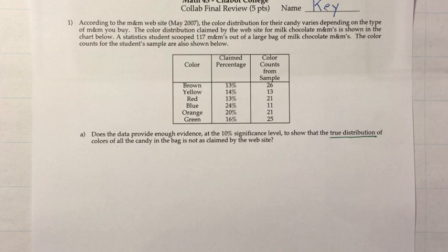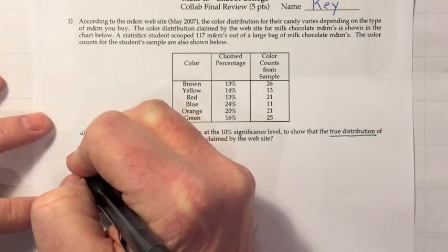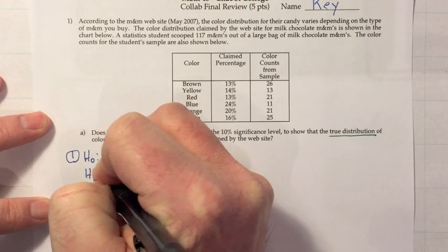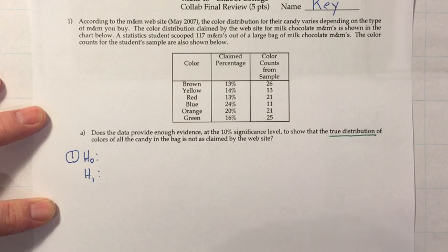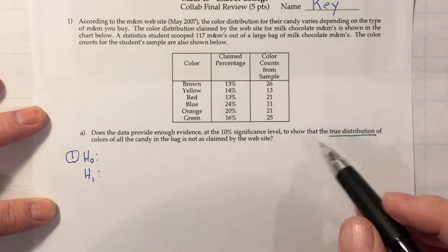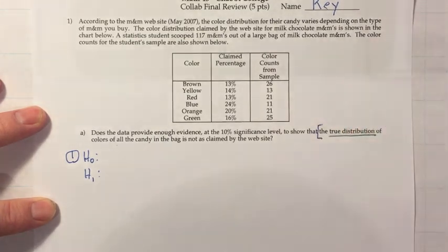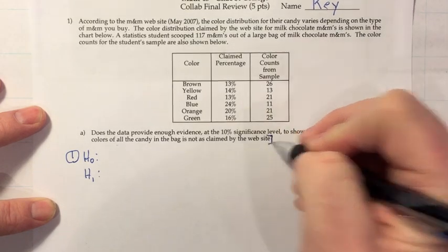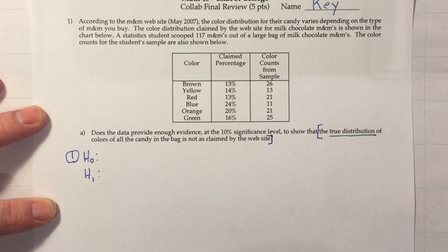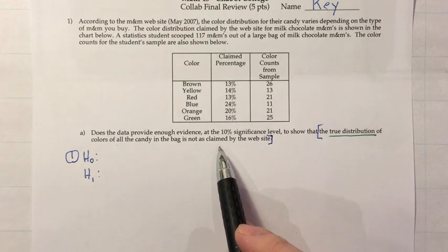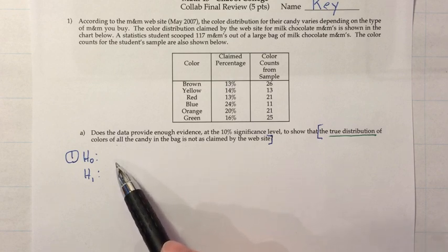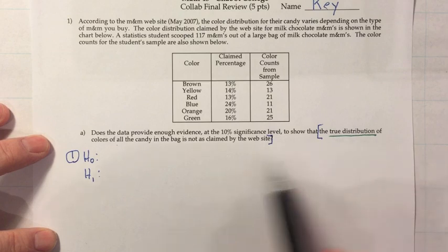We're going to do the six steps. Step one is to write down the null and alternative hypotheses — H0 and H1 — and for these they are written in words. A lot of times you'll find the wording right in the question. What do they want us to show? That the true distribution of colors of all the candy in the bag is not as claimed by the website. That has a 'does not equal' sound to it, so that should be H1, because H0 must have an equality.